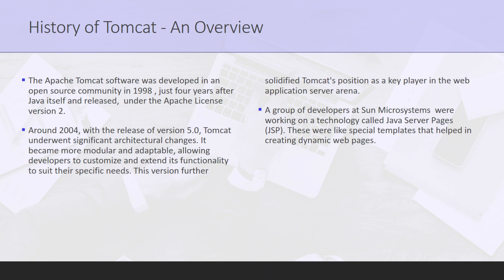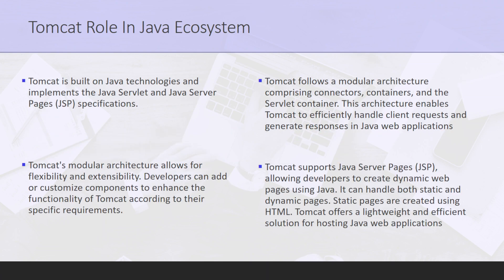Now let's discuss the role of Apache Tomcat in the Java environment and Java ecosystem. As discussed, it is particularly designed for Java-based applications. Apache Tomcat serves as a fundamental building block for Java web applications. It offers a reliable and efficient platform for creating, deploying, and running web-based software or applications, and provides a wide range of features that make it the number-one choice for developers in the Java ecosystem.